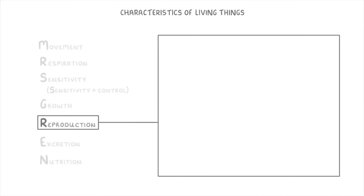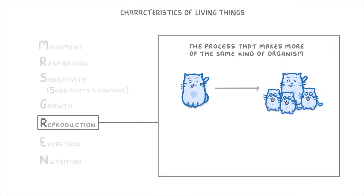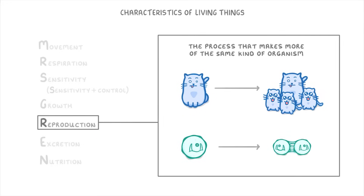Then we have Reproduction, which we can describe as the process that makes more of the same kind of organism — like a cat having kittens, or a large bacteria dividing into smaller bacteria.